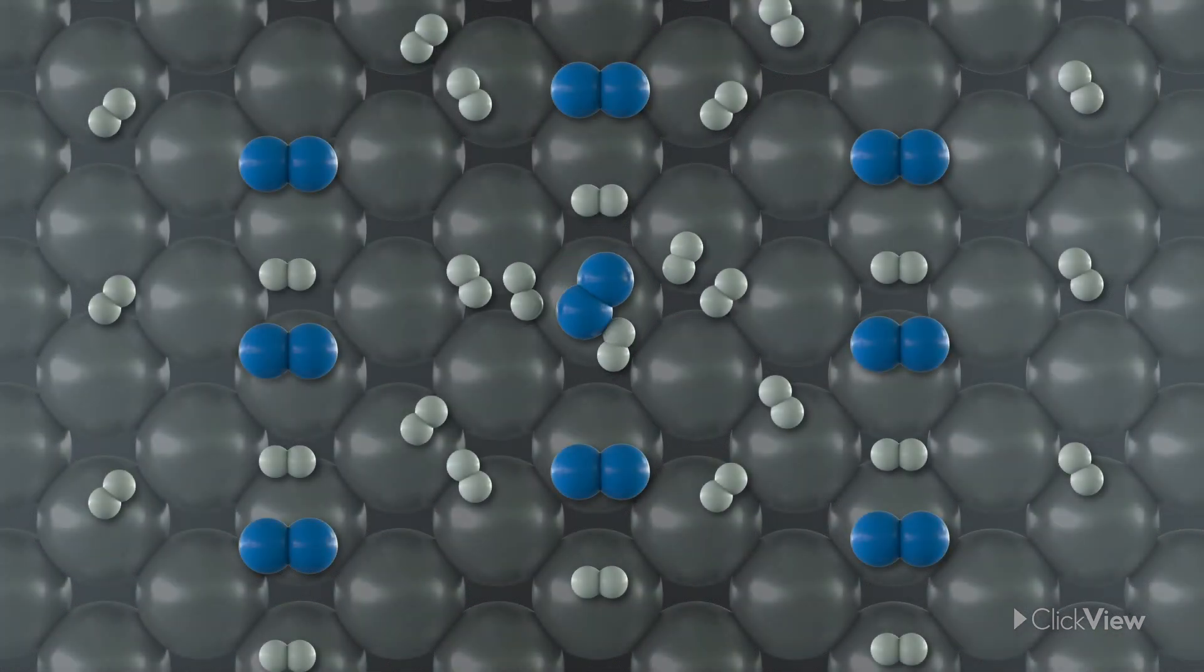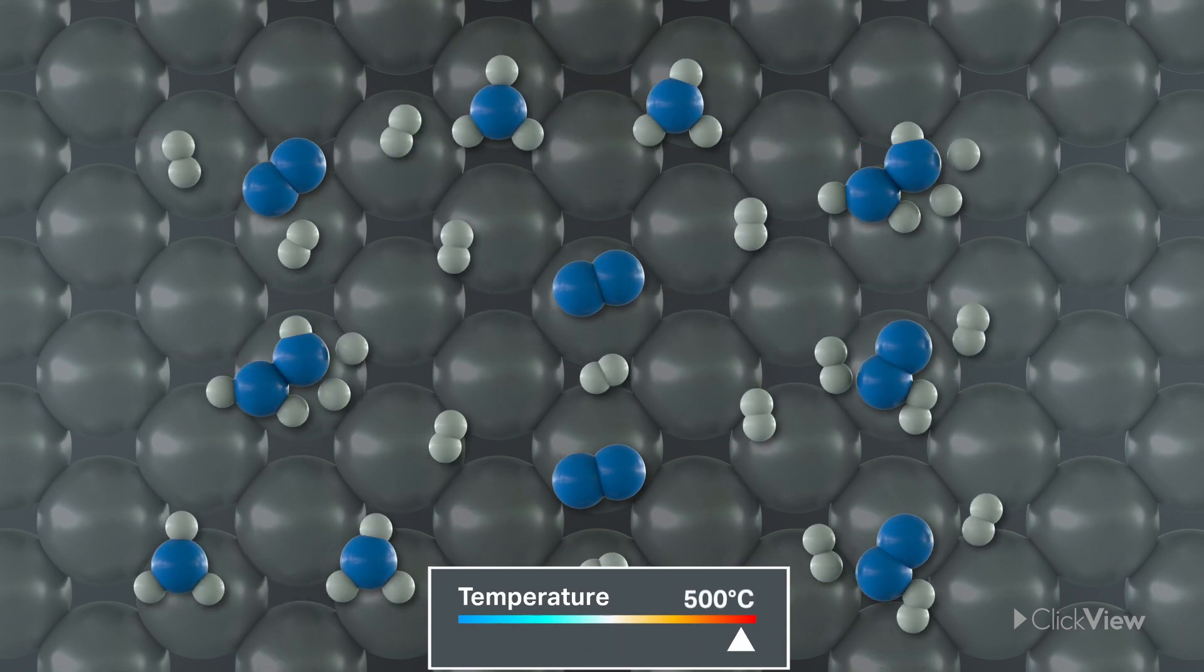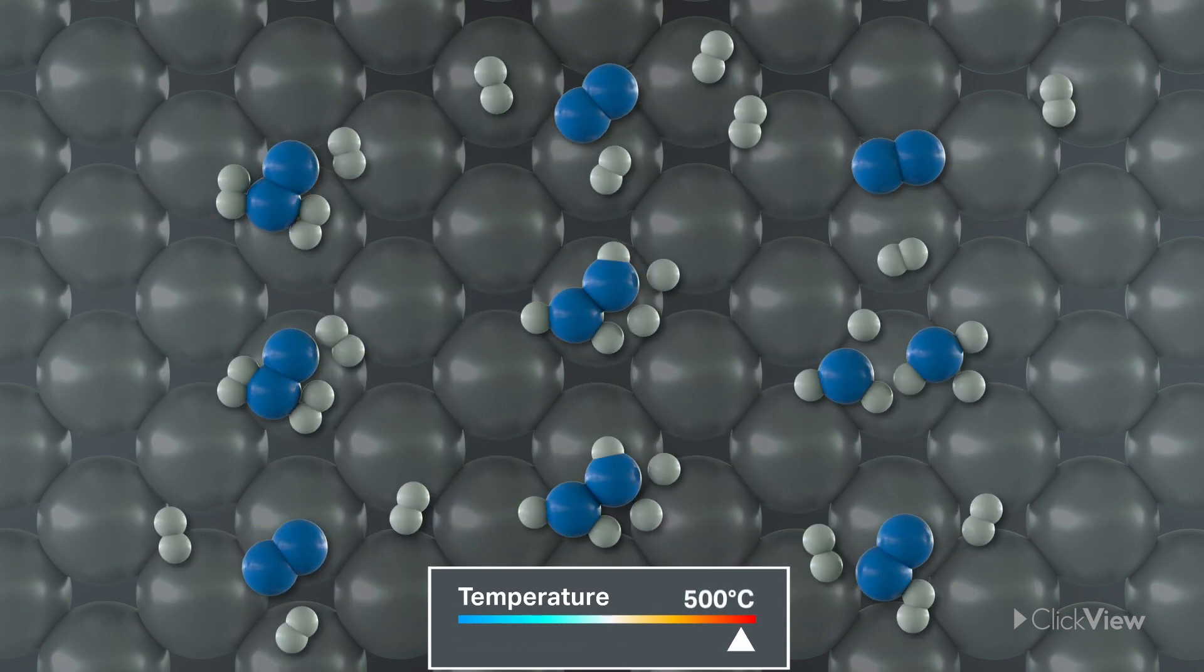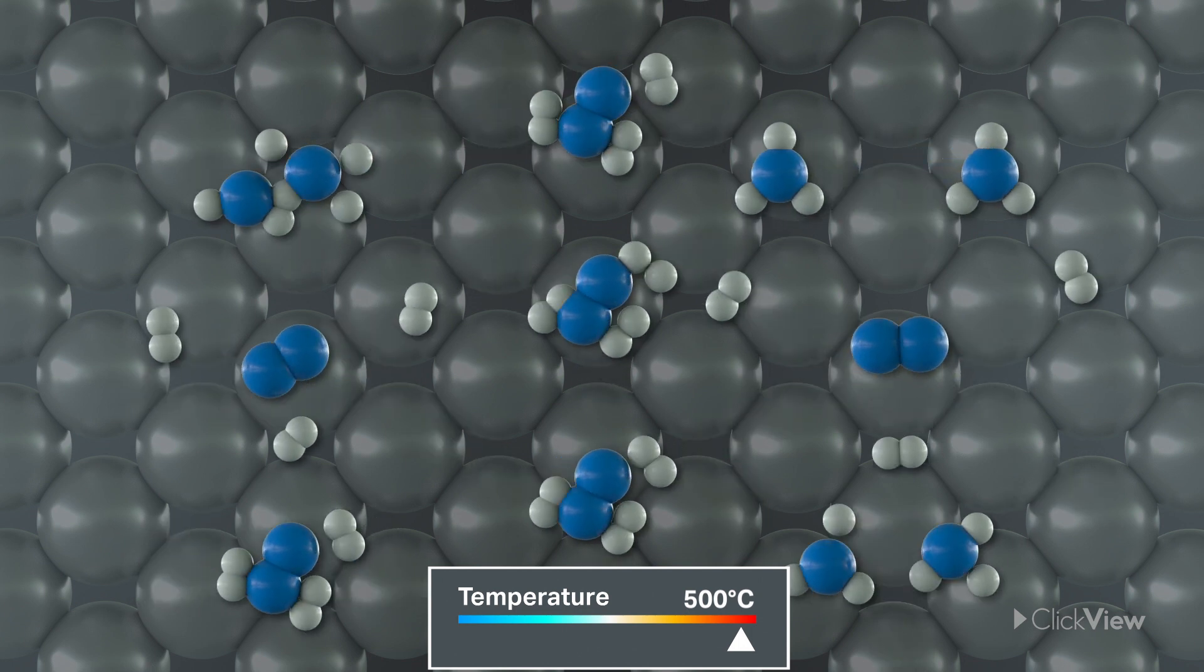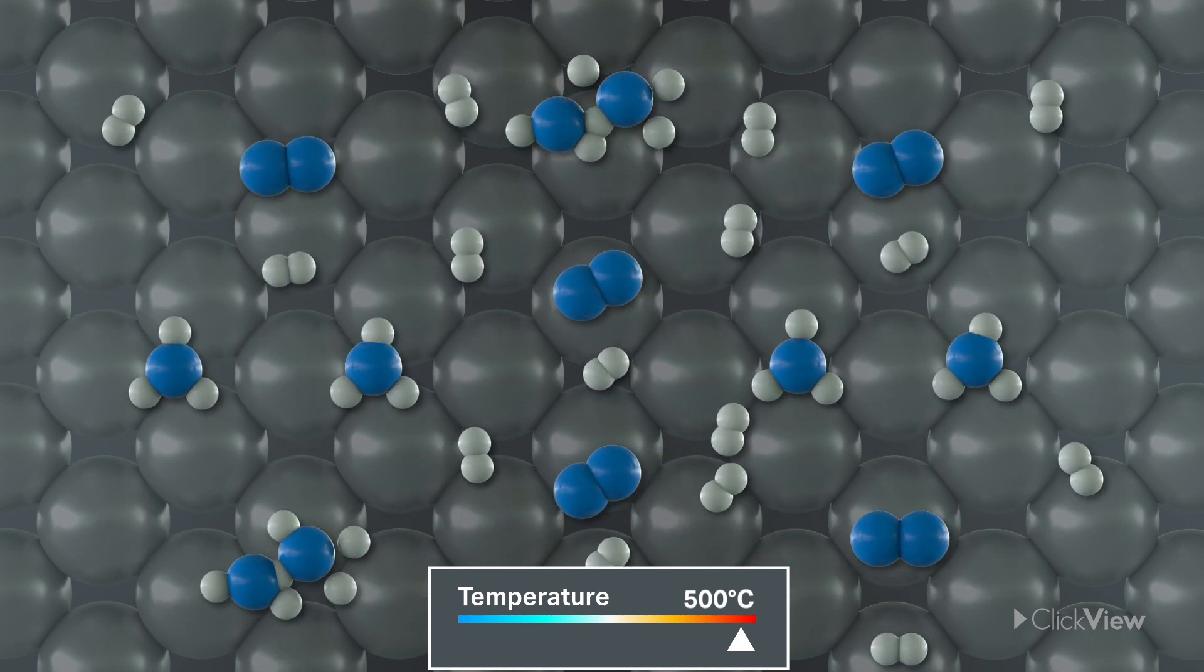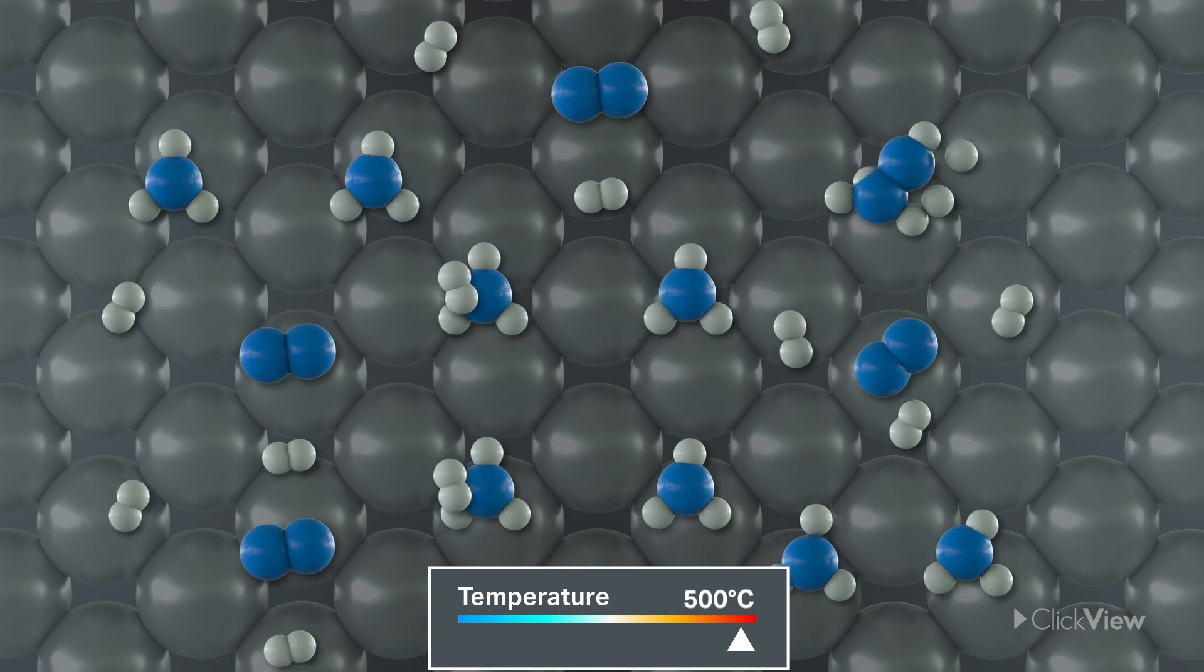These catalysts require a temperature of close to 500 degrees Celsius to work. So while the forward reaction picks up speed, the ammonia also crumbles the moment it's made, making it hard to extract fast enough.